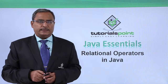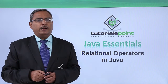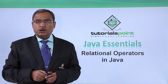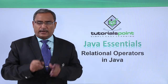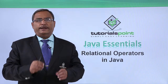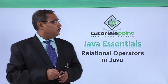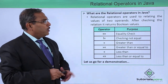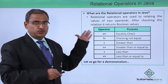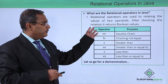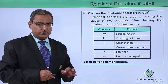Relational operators in Java. In Java programming we have multiple relational operators which operate on two operands and after performing the operation, they return one boolean value — that means either true or false. So relational operators are used to relate the values of two operands, and after checking the relation, it returns a boolean value that is either true or false.